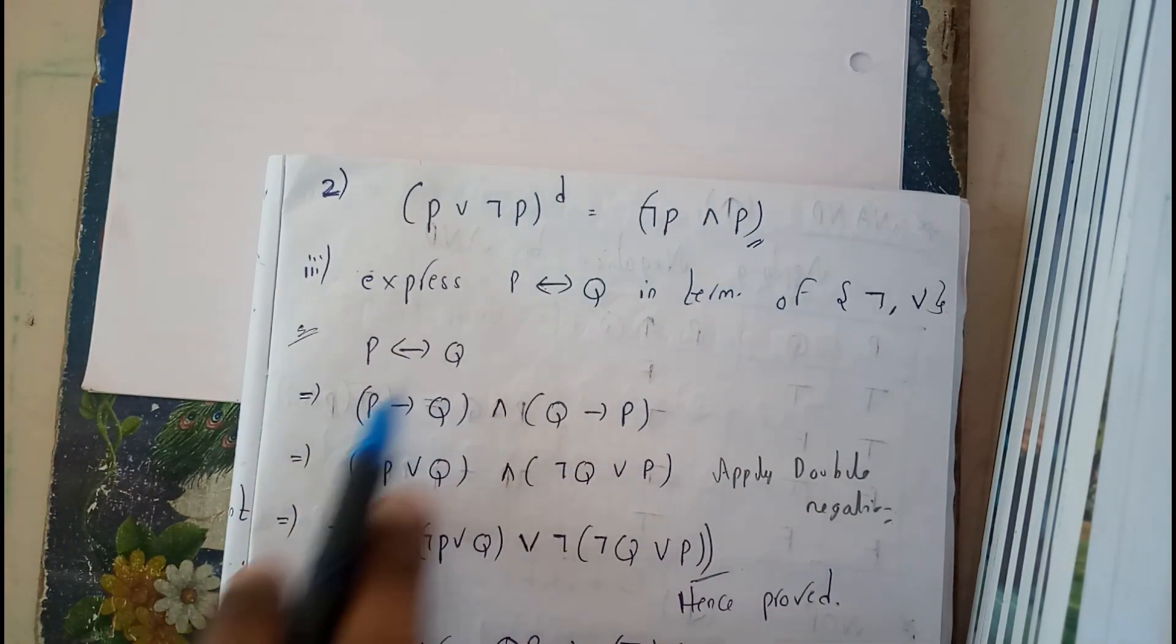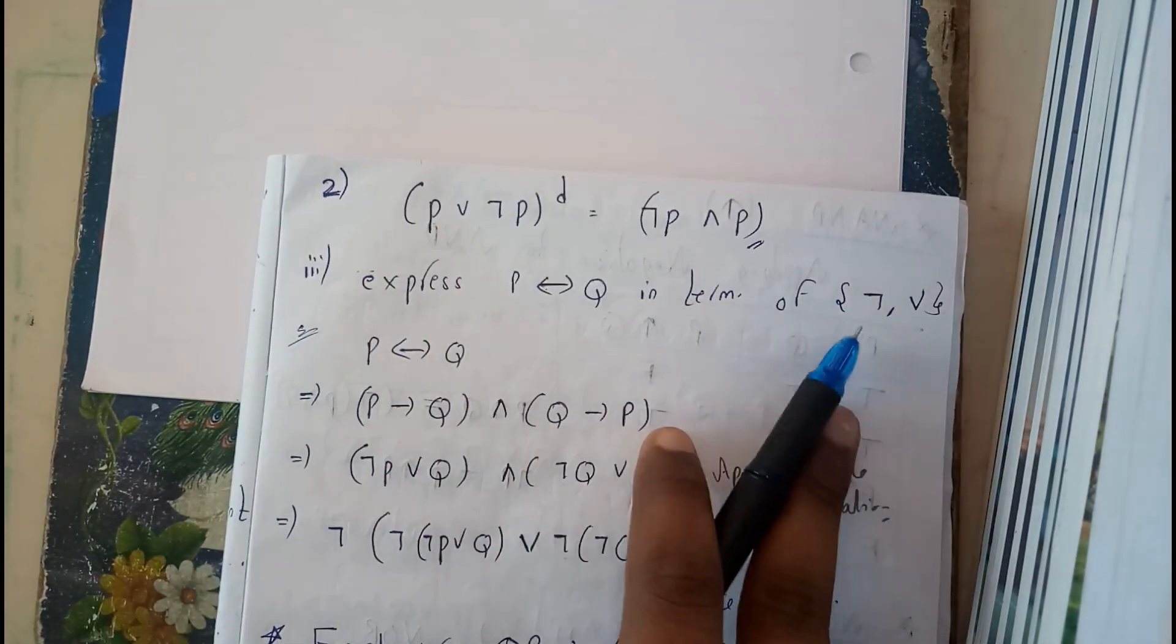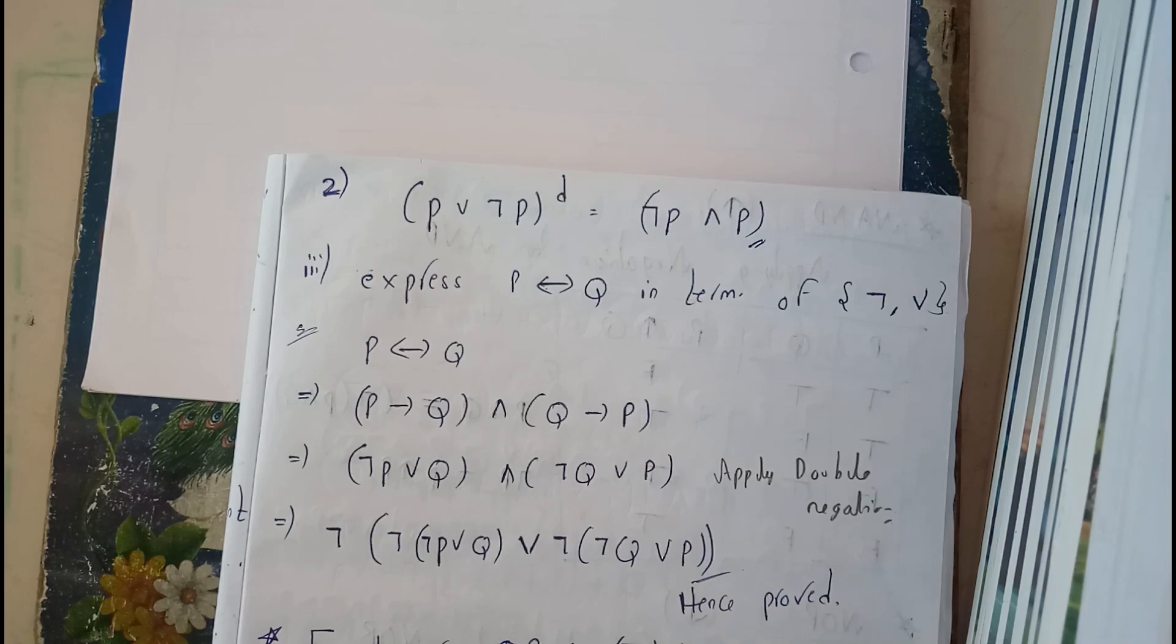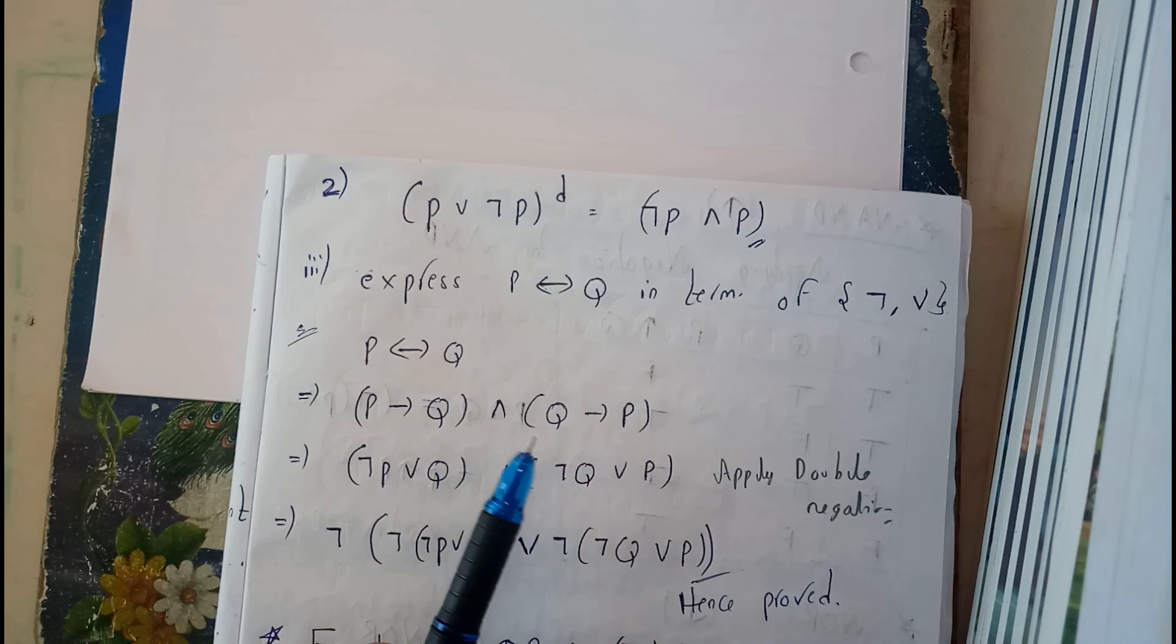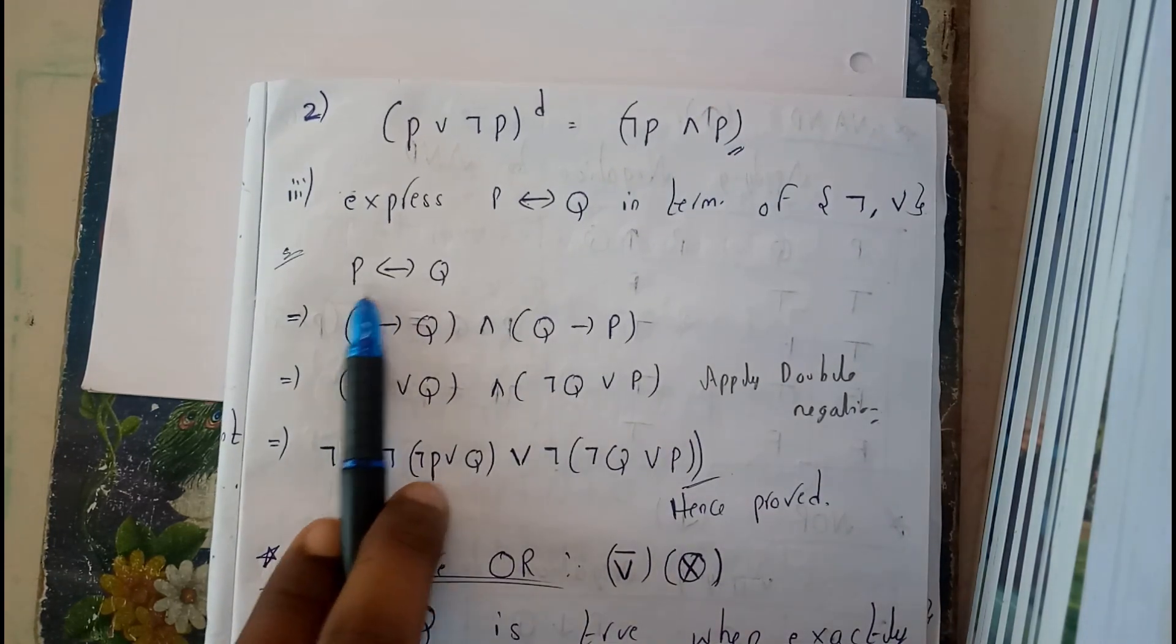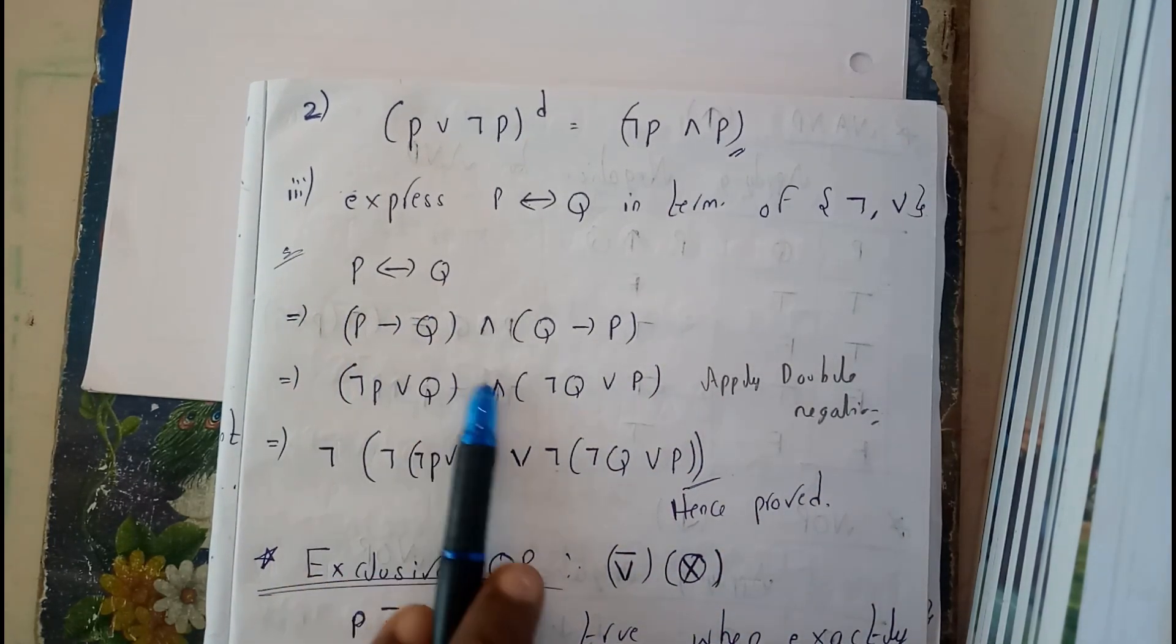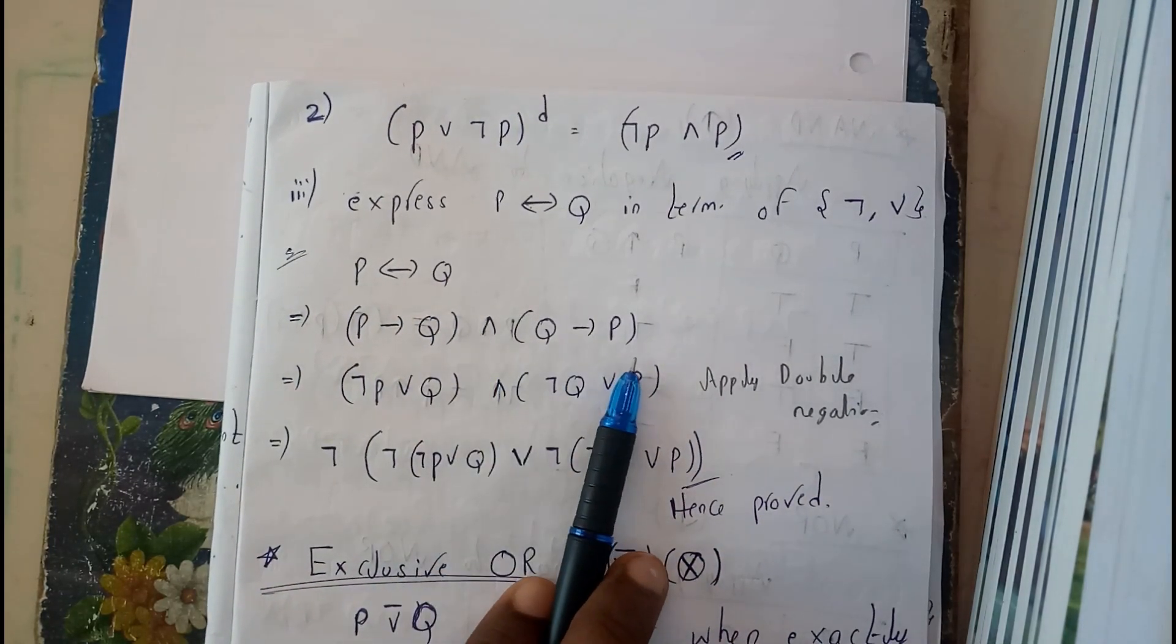I think this is a bit of a thinking question. Everyone will be getting shocked—how can we express that? Let's see: P double implies Q is P implies Q AND Q implies P. We've got this formula previously; I have proved it if you remember.